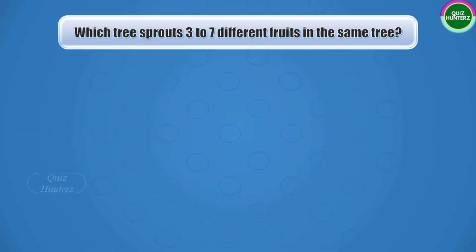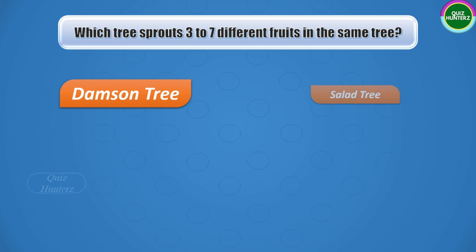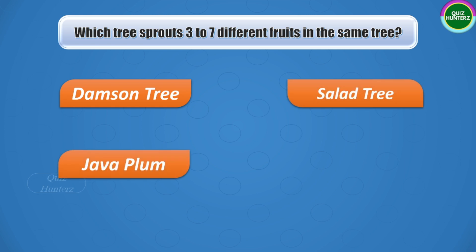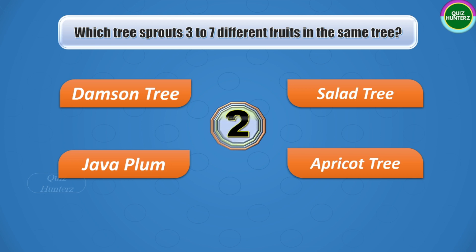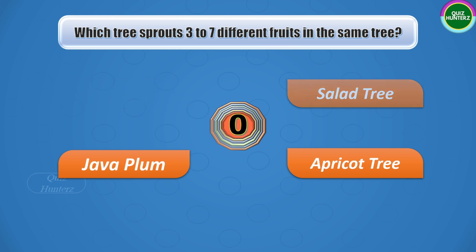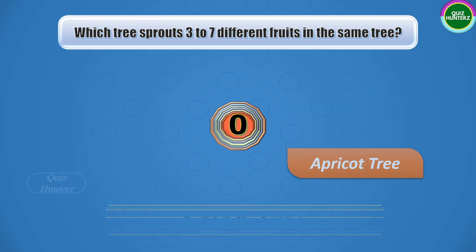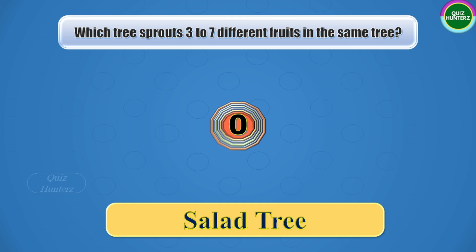Next question: which tree sprouts three to seven different fruits on the same tree? The options are damson tree, salad tree, java plum, or apricot tree. The time starts now. And the correct answer is salad tree.